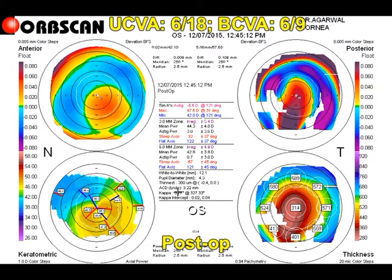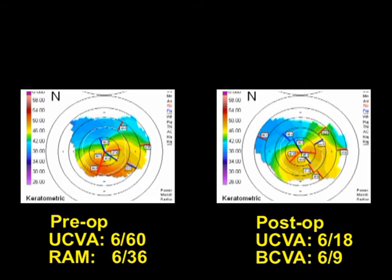At the sixth post-operative day, the patient's uncorrected visual acuity improved from 6/60 to 6/18, and his best corrected visual acuity improved from 6/36 to 6/9. This was a very happy patient. You can see the comparison between the keratometric maps pre-operatively on the left and post-operatively on the right, which definitely shows a lot of improvement in the cone.